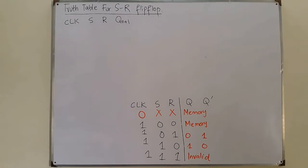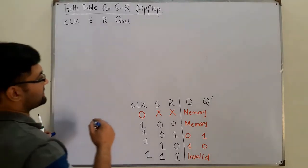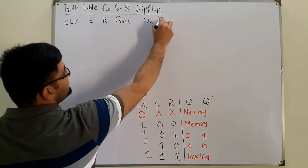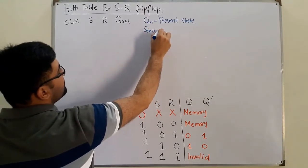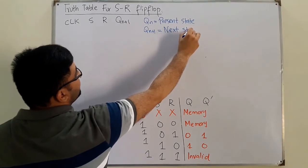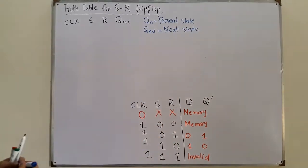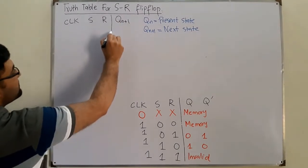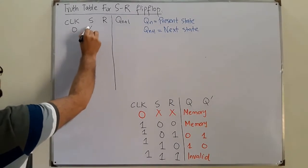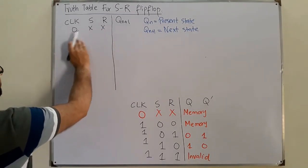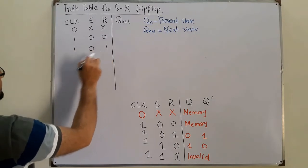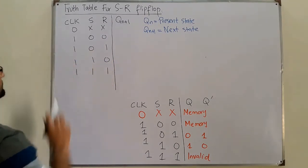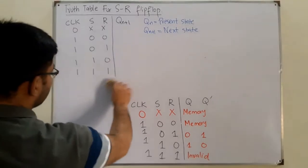What is Q(n+1)? Q(n+1) represents the next state. If Q(n) is the present state, then Q(n+1) would be the next state. In flip-flops we talk about present and next states. Now filling this in the same way: 0, 1, 0, 1, 1, 0 — sorry — 1, 0, 1, 1, 1, 0, and 1, 1, 1.